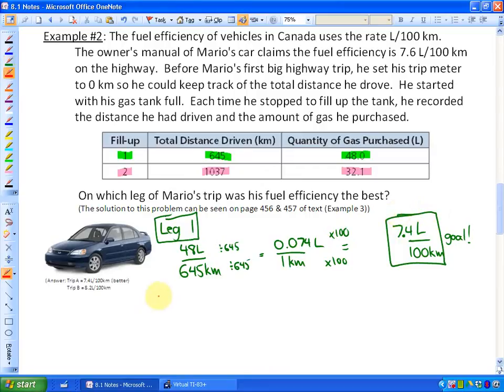Leg number two is slightly more difficult because in leg number two we know that it took him a total of 32.1 liters but the distance was not 1037. The distance, that's his odometer,